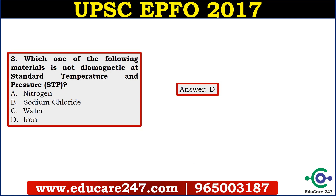Apart from reasoning questions, there were many factual questions in the science paper as well. The question is: which one of the following materials is not diamagnetic at standard temperature and pressure? Here the answer is iron. It is a completely factual question. You must remember these kinds of facts so that directly in the examination you can mark the answer.